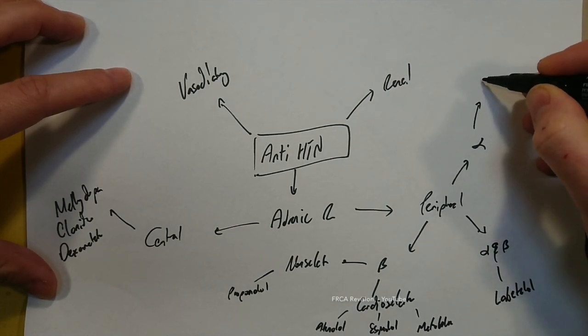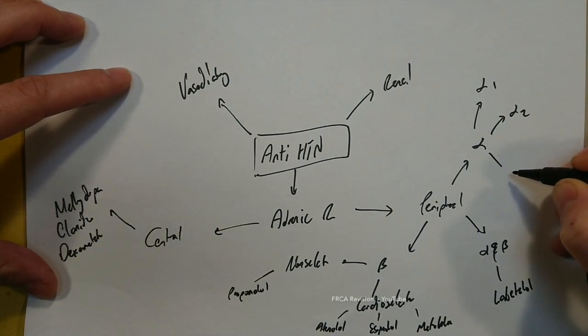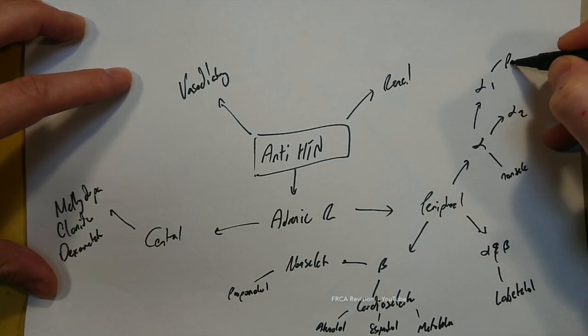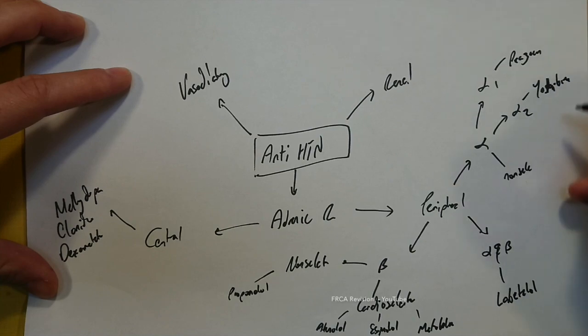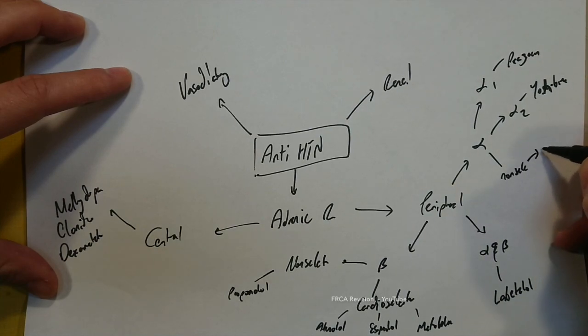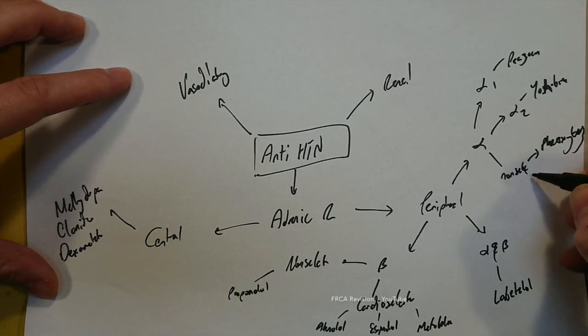And then the alpha can either be alpha-1, alpha-2, or non-selective. So this can include prazosin, this is your -zosin, and then phenoxybenzamine and phentolamine.